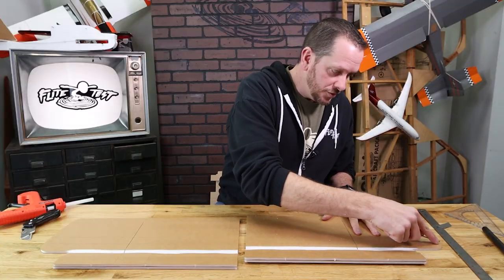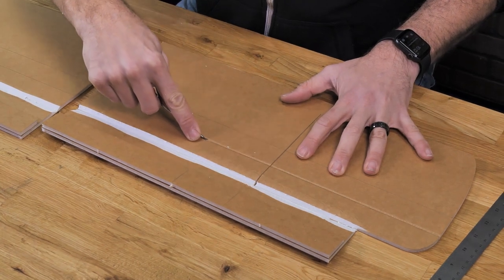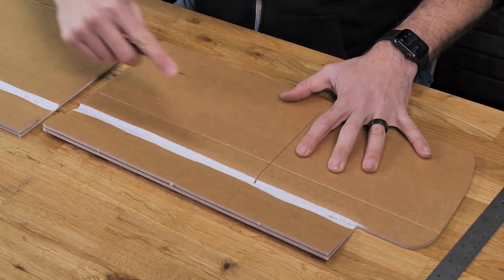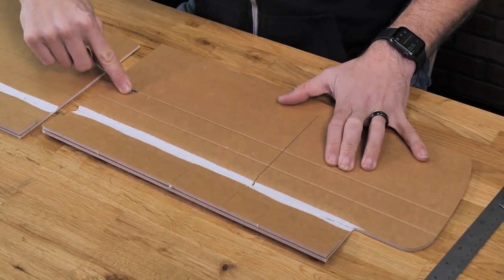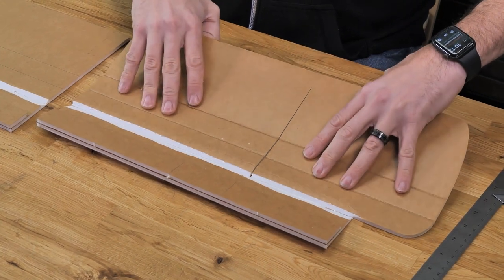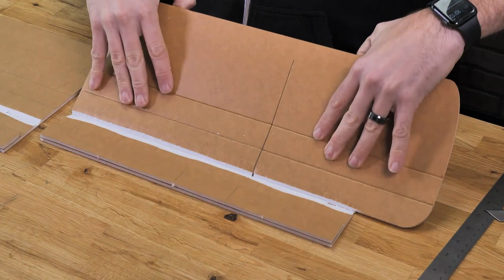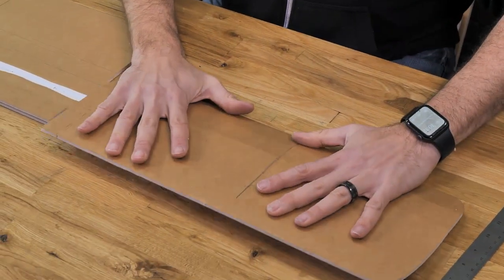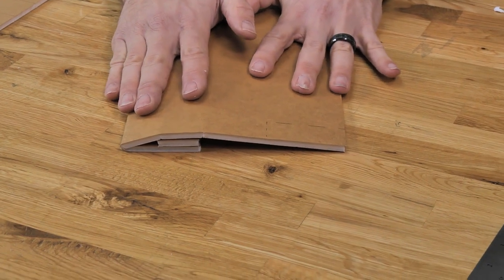Using the tip of a ballpoint pen or screwdriver, we're just barely going to break the tension of the top piece of paper along the two score cuts. This is going to help the wing fold over naturally and easily. Now that we've broken that tension on the top surface of the wing, we can use our fingers and bend the wing up into its shape.